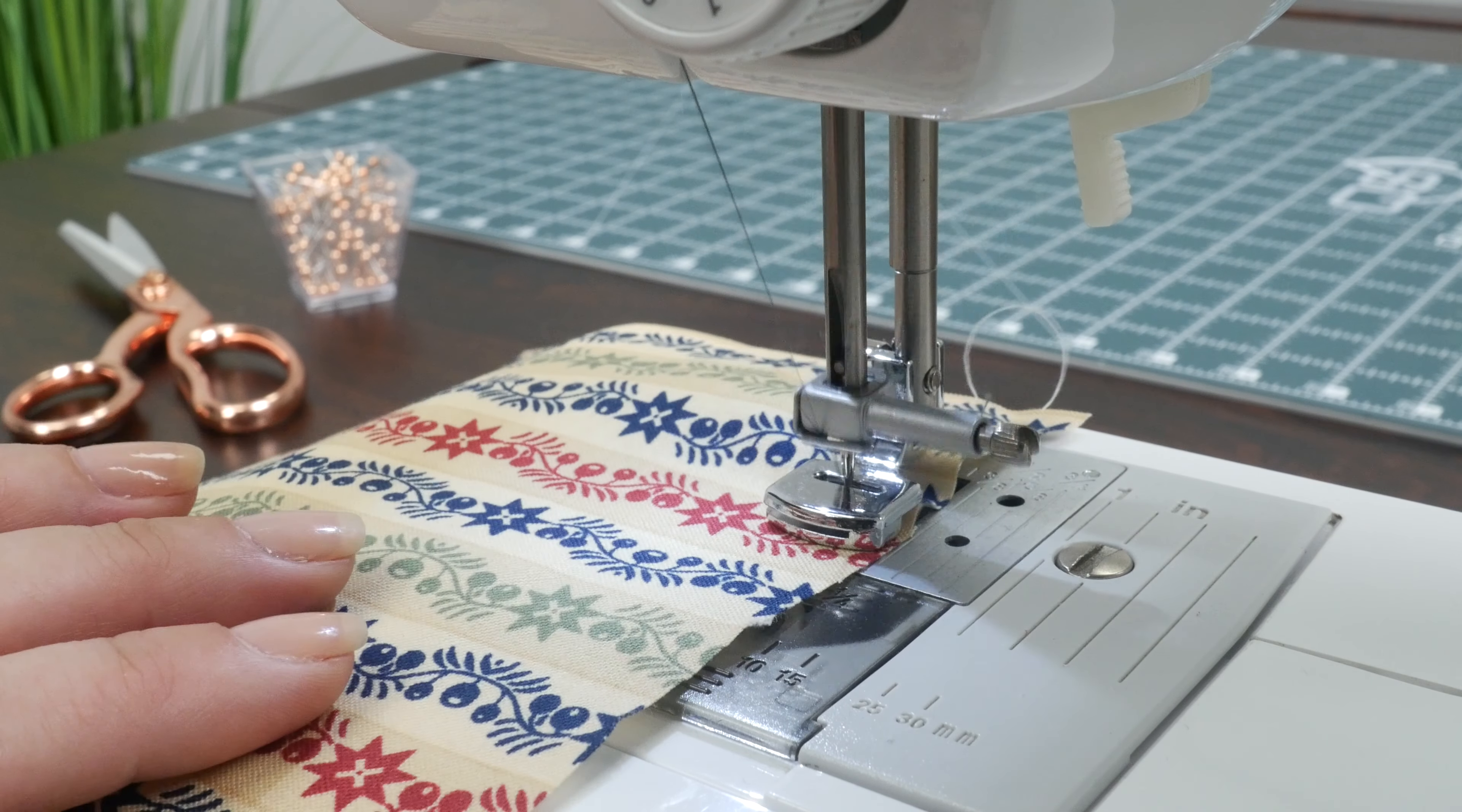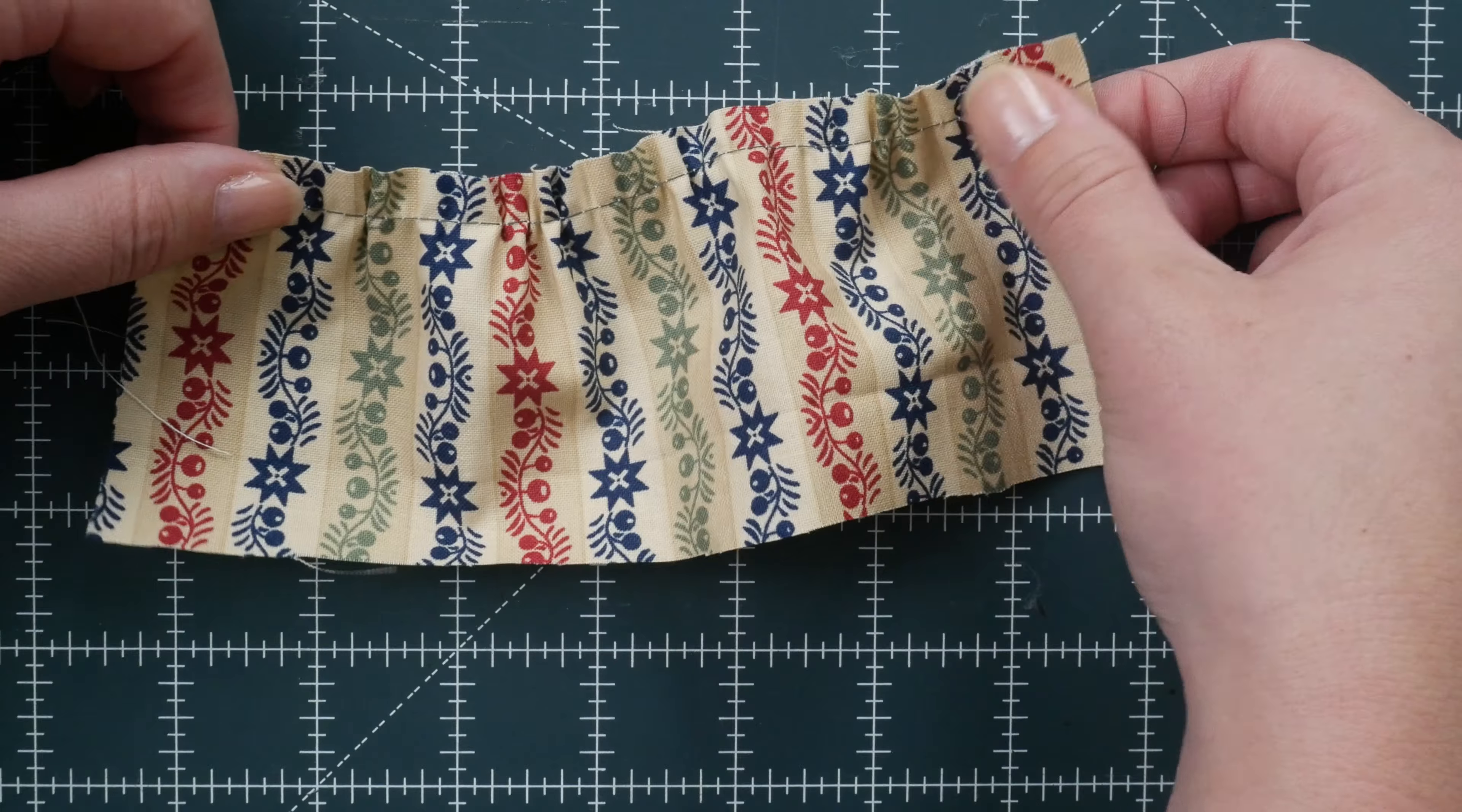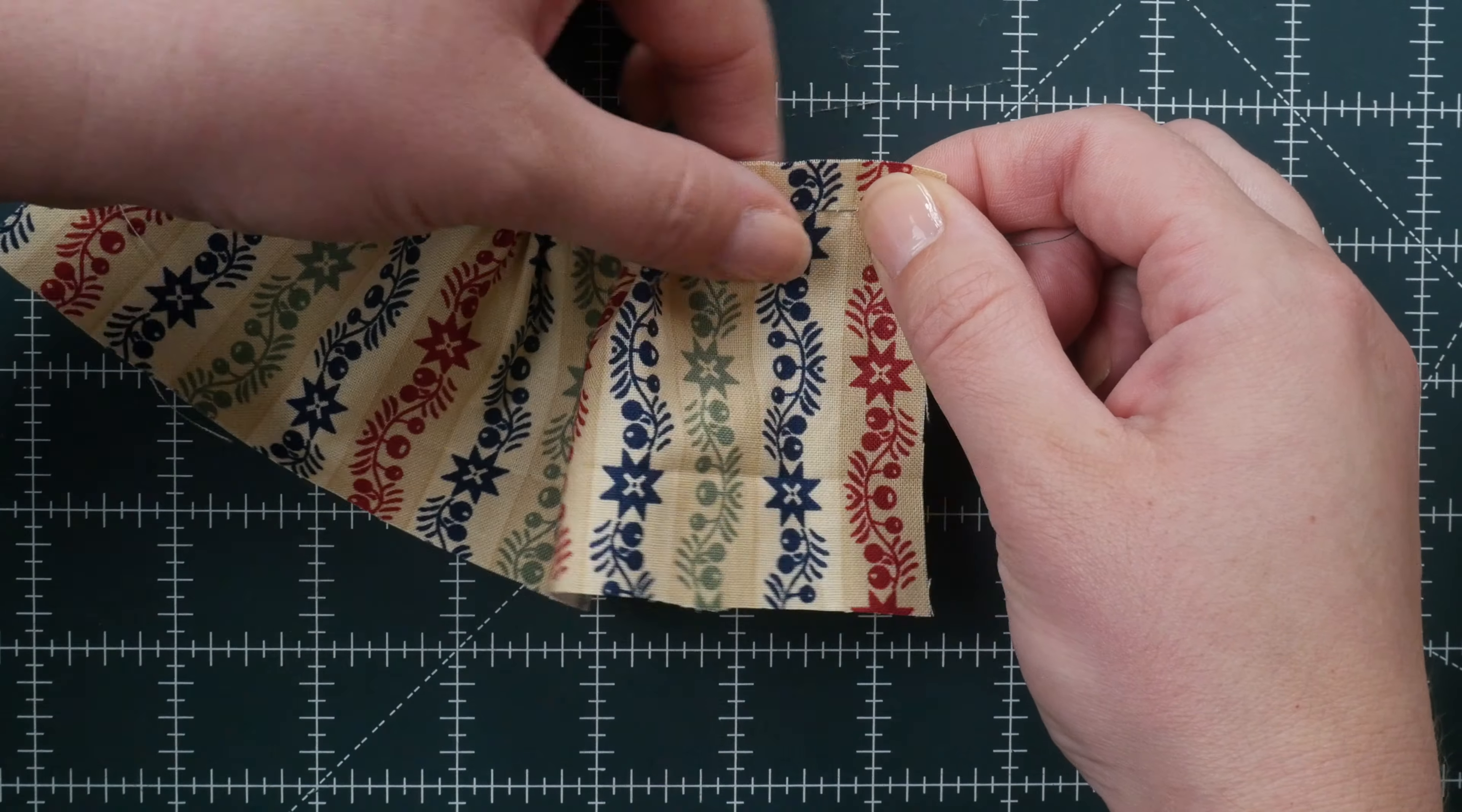Since you've made all the adjustments, you are able to just begin to sew. If you need to adjust your gathers, you can do so by simply pulling the needle thread. Then you can manipulate the gathers as you'd like.